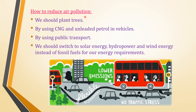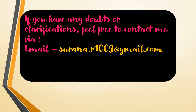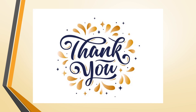How to reduce air pollution? Air pollution can be reduced by adopting the following measures: planting trees, using CNG instead of petrol/diesel vehicles, using public transport, and switching to solar energy, hydropower, and wind energy instead of fossil fuels for our energy requirements. If you have any doubts or clarifications, feel free to contact me via my email. Thank you everyone.